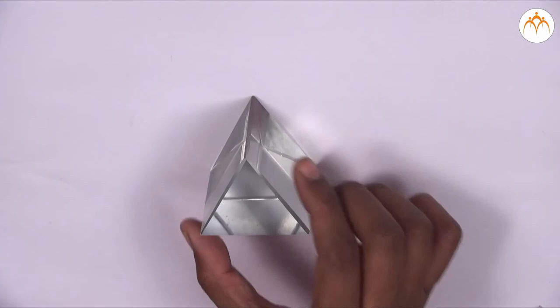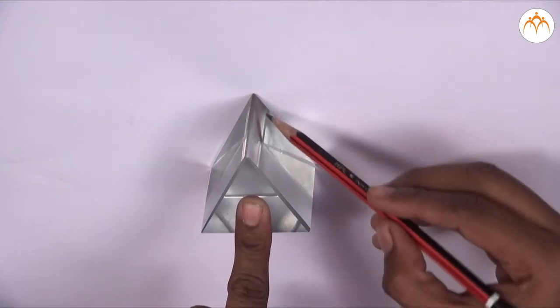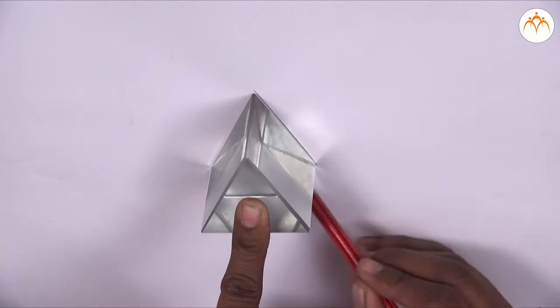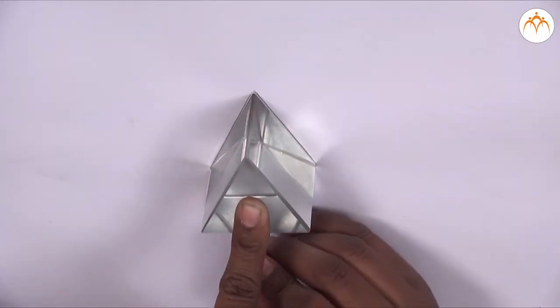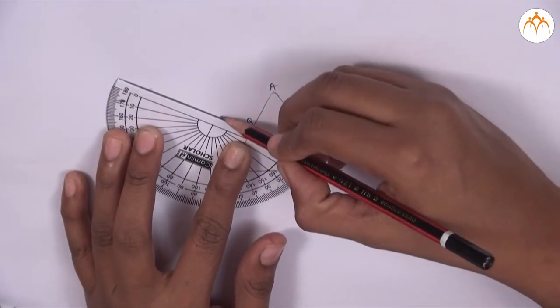Then we place the prism along its triangular base on the middle of the paper. Mark the boundary ABC of the glass prism. We remove the prism and draw a normal LM at point Q on side AB.